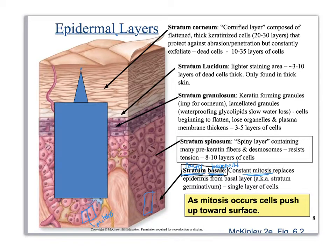As new cells are created in the stratum basale, they push the older cells up through the layers. A cell that starts at the bottom will eventually make it all the way to the surface and be sloughed off when you scratch that spot.